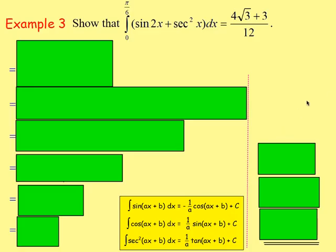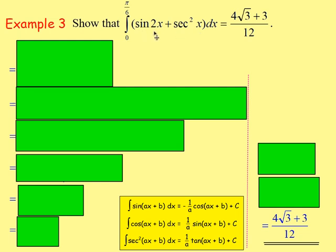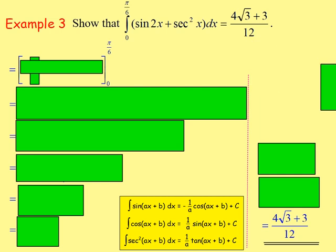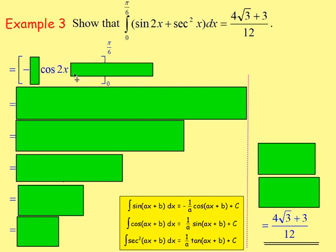Example three: show that when you integrate sin(2x) + sec²(x) with respect to x, between zero and π/6, you get (4√3 + 3)/12. So they're giving us the answer — we want to show all the steps in between. Integrating: sin(2x), when you integrate sin, it goes to negative cos. So we'll have negative cos(2x). But it's sin of 2x, so you deal with the brackets — differentiate 2x, you get two, which means you divide by two.